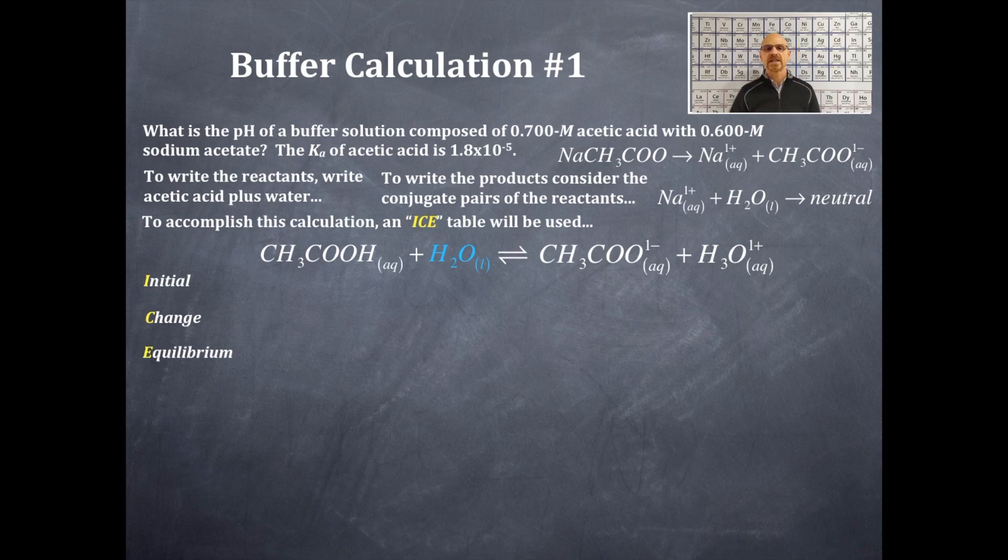What's the initial concentration of the acetic acid that was given in the problem? 0.700 molar. So I'm going to plug that in right there for the acetic acid. What's the initial concentration for water? Well, I don't really care because it's a liquid and it will not be included in the Ka expression. What's the initial concentration for the acetate ion? Well, that is dependent upon the sodium acetate being a salt and dissociating 100%, and that was 0.600 molar. And then the initial concentration for the hydronium ion. Now, the hydronium ion, like on all the other equilibrium reactions that we have been doing on the initial portion, is going to be zero.